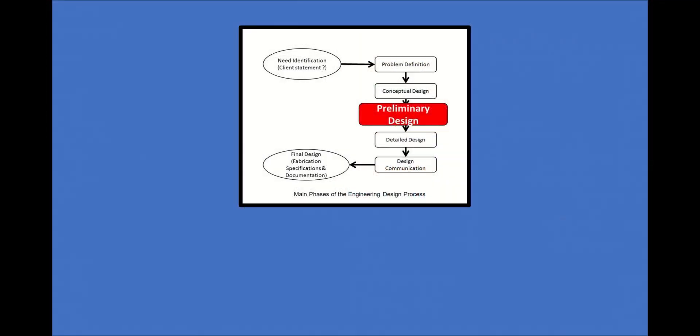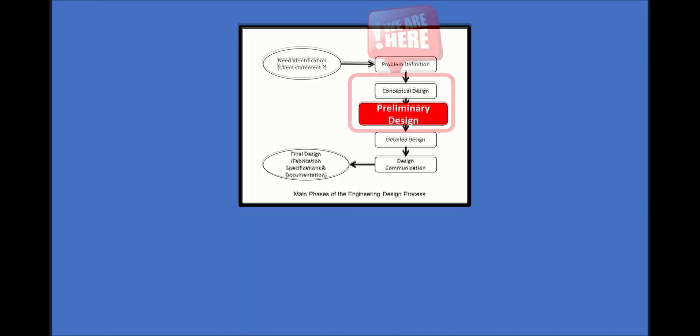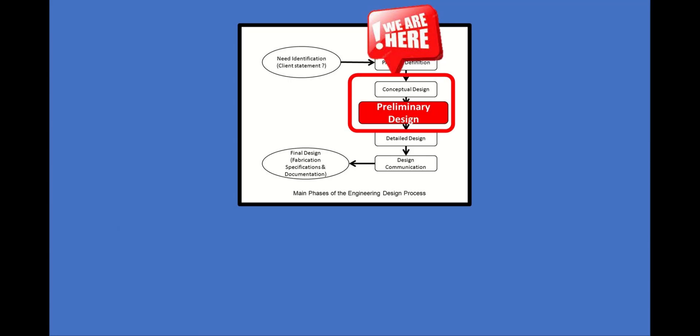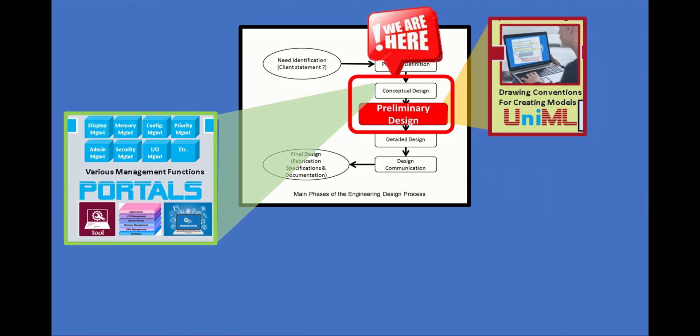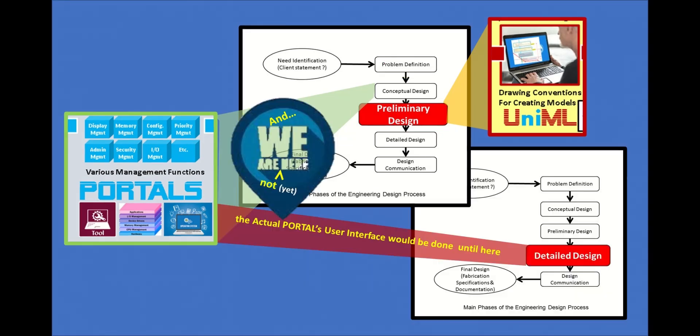So, this diagram shows the typical engineering design process and its various stages. And essentially, at the present, we are here in these two stages, where for portals we are still for sure in the conceptual design phase, while for UniML we are a bit further along, and as such one might say we are now mostly in the preliminary design phase. But we are not at the detailed design phase, as such I cannot show displays that are yet to be designed. Well, I guess that makes sense.